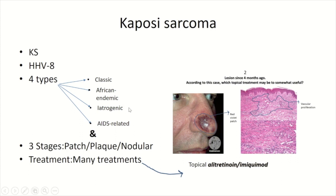The iatrogenic subtype is related to immunosuppressive drugs such as corticosteroids and cytotoxic agents, especially cyclosporine. The AIDS-related type is more common in homosexual men. The lesions in this type may be solitary or multiple, mostly affecting the trunk and mid-face, as in this case.